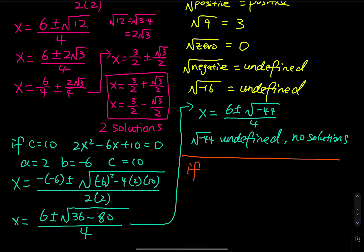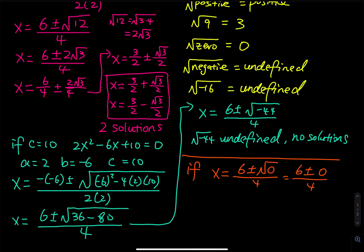What if you have x equals 6 plus or minus the square root of 0, over 4? Then this is 6 plus or minus 0, divided by 4. Since 0 plus 0 and 0 minus 0 both give 0, the top is always 6, so x equals 6 over 4. That gives one solution.